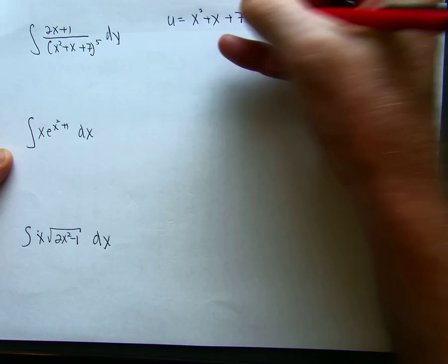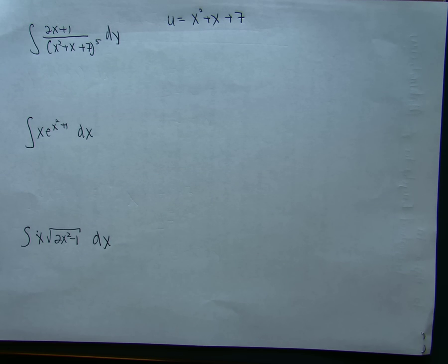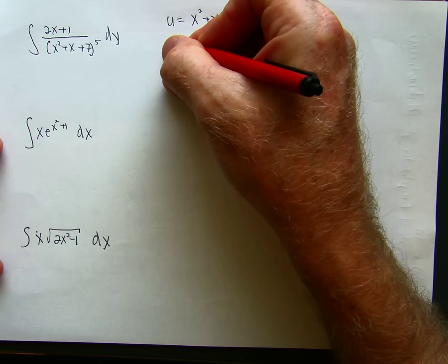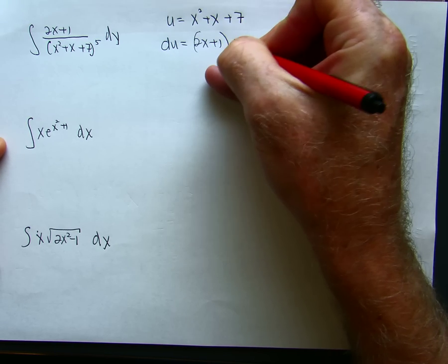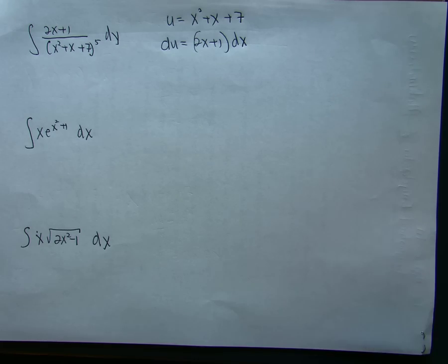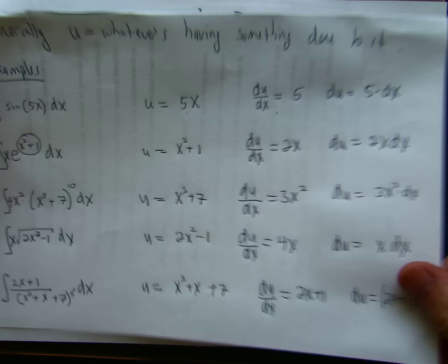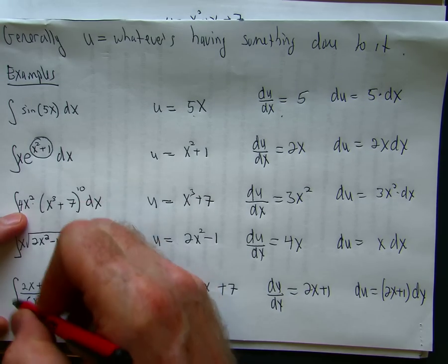Now, I'm going to skip the actually calculating du dx step and go right to here and say du is equal to 2x plus 1 dx. And again, to see how I got that, looking back at the first sheet we did, we're looking at this problem right here.